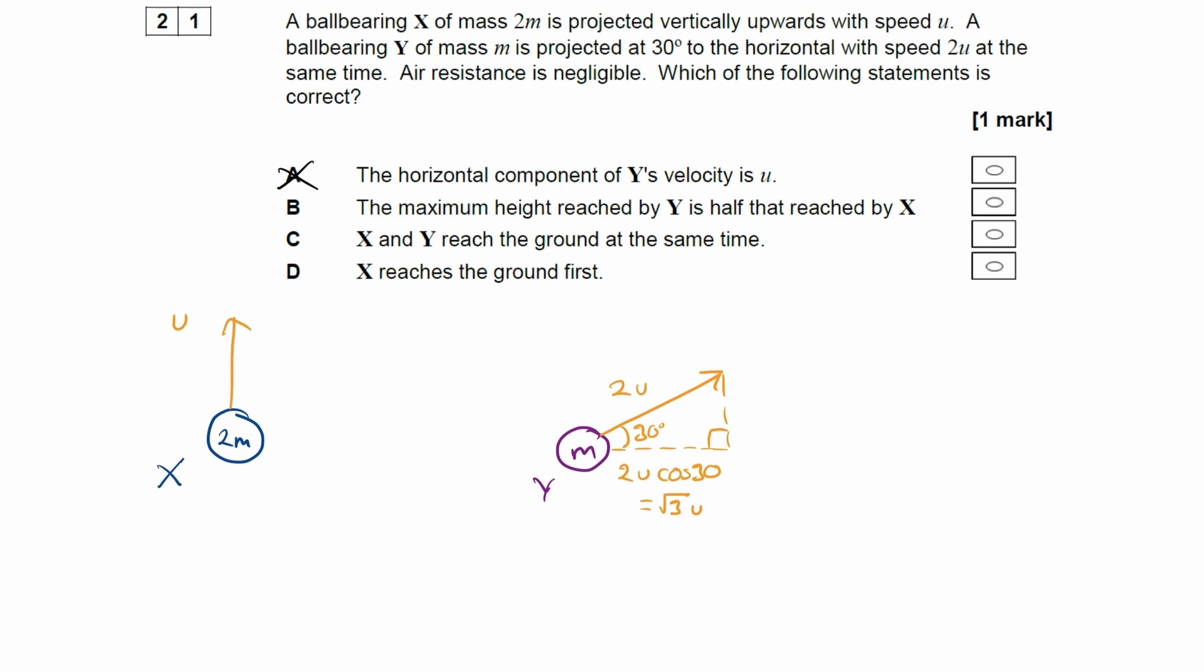Option B. The maximum height reached by Y is half that reached by X. So maximum height is determined by the vertical speed and the vertical speed only. And later on, after we've gone through the question, I can show you why that is the case. So to work out the initial vertical velocity of Y, so we're trying to work out this component here.